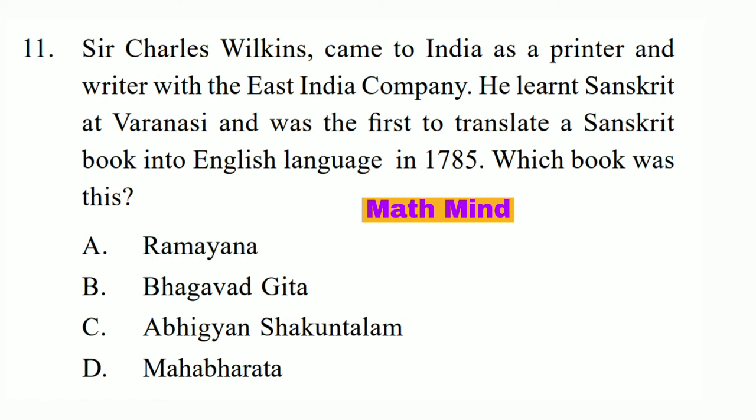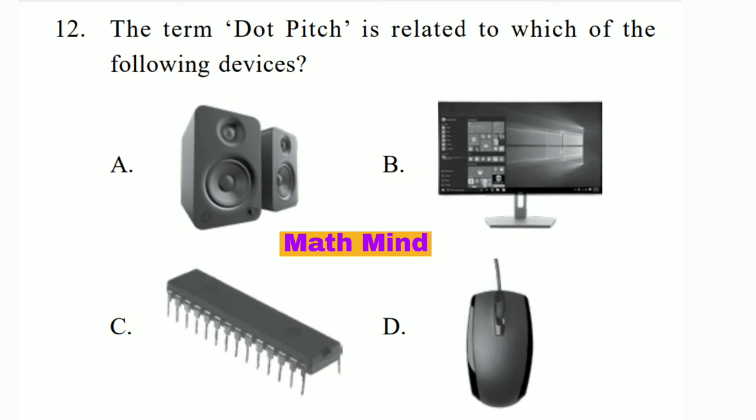Question No. 12. The term Dot Pitch is related to which of the following devices? Option B is correct: Desktop. Dot Pitch is a specification for a computer display, computer printer, image scanner, or other pixel-based devices that describes the distance, for example, the distance between dots.